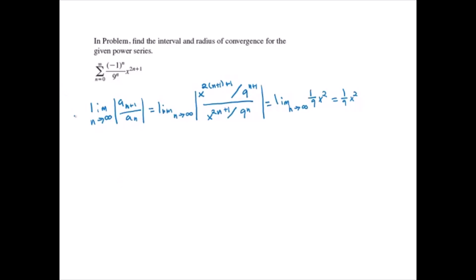We can see that this series is absolutely convergent when 1 over 9x squared is less than 1, or on the interval negative 3 to 3.